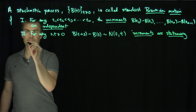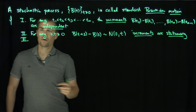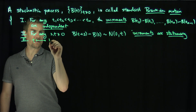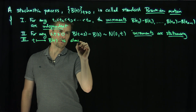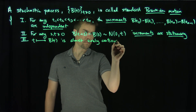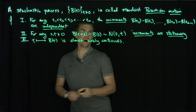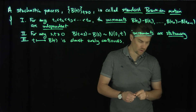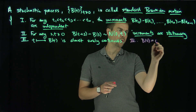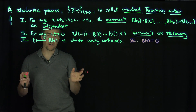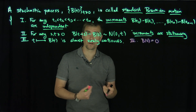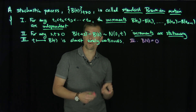Condition three is that, almost surely, the map from t into b(t) is continuous. For standard Brownian motion, we also need condition four: b of zero is equal to zero. This is what Brownian motion is defined as abstractly. With this definition, we have no idea that such a process even exists, and we'll construct one using the Norbert-Wiener construction in further videos.